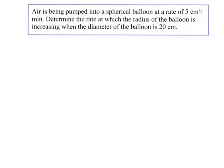In this video we're going to look at a couple more related rate examples. Air is being pumped into a spherical balloon at a rate of 5 cubic centimeters per minute. Determine the rate at which the radius of the balloon is increasing when the diameter of the balloon is 20 centimeters.